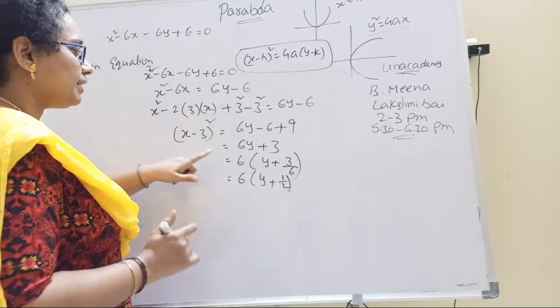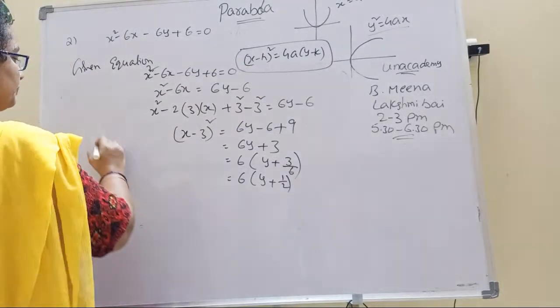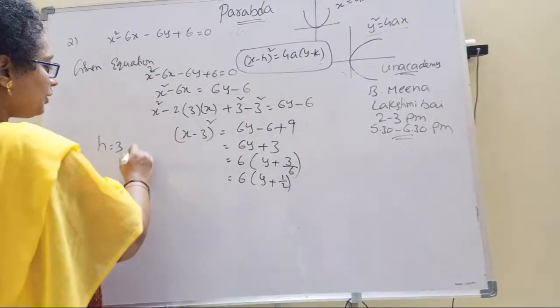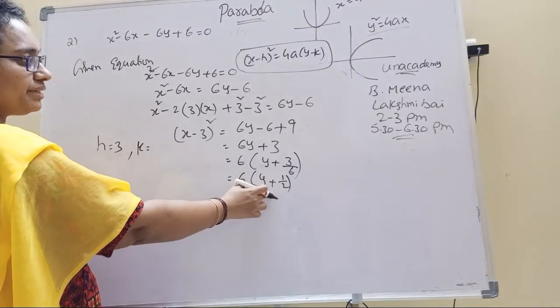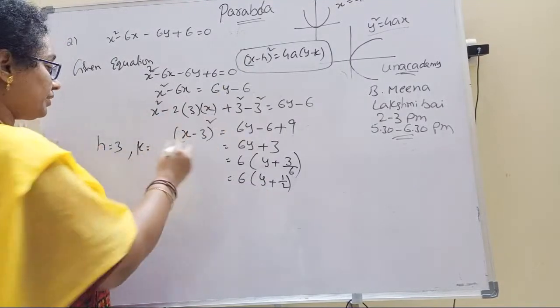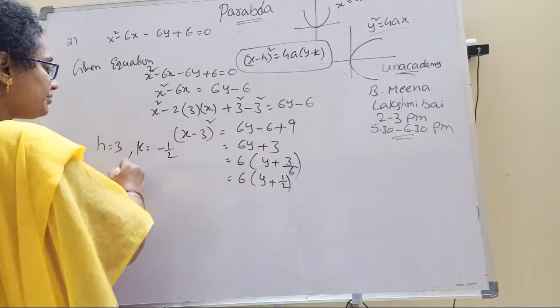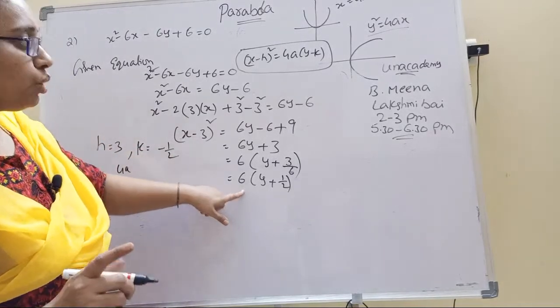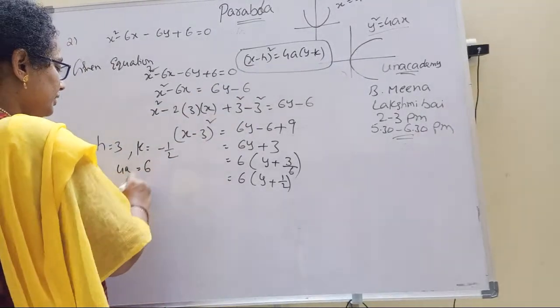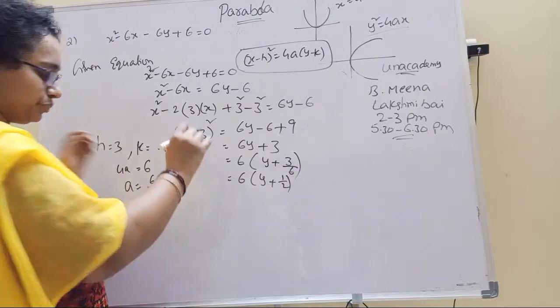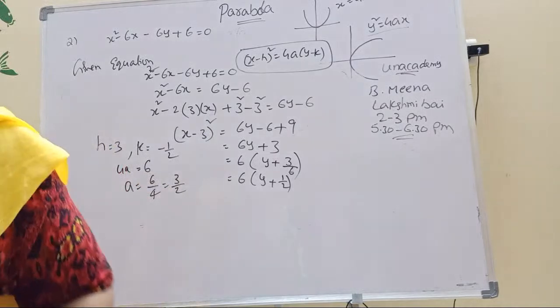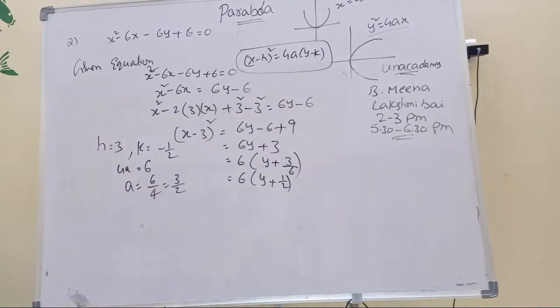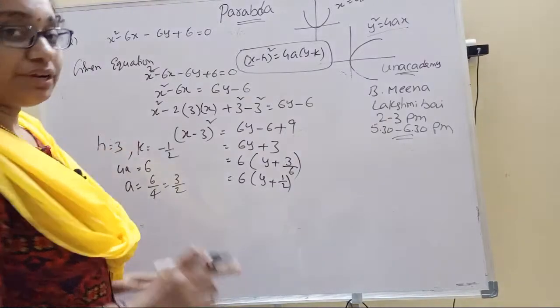h, k, a are important. If you compare: h equals 3, k equals minus 1 by 2, a equals 6 by 4 which is 3 by 2.